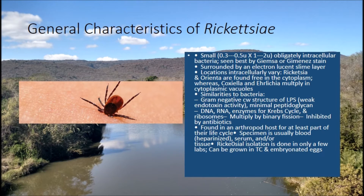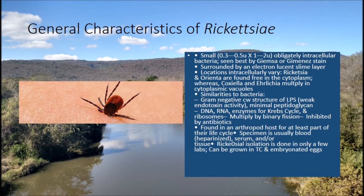Some general characteristics of Rickettsia: the organisms of the family Rickettsia are very small, structurally similar to gram-negative rods, although they stain poorly with the gram stain and grow only in the cytoplasm of eukaryotic cells. The pathogenic species of Rickettsia are maintained in animal and arthropod reservoirs and are transmitted by arthropod vectors such as ticks, mice, lice, and fleas. Humans are accidental hosts in this case.